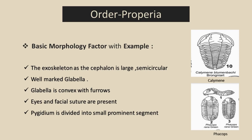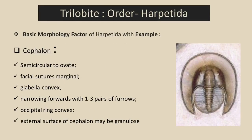Looking at the figure, we can detect common morphological features: both have a large, semicircular cephalon. We can easily identify the glabella, which is located at the medial part of the head; the glabella is convex and there are furrows on it. Both Calymen and Phacops have eyes and facial sutures, as discussed previously. The pygidium is divided into small segments.